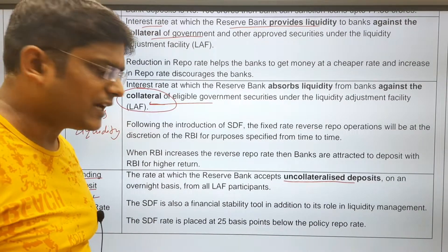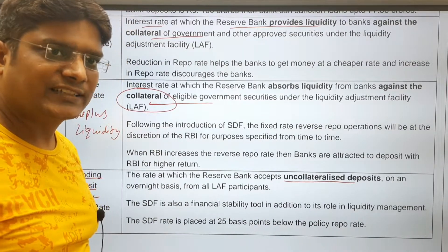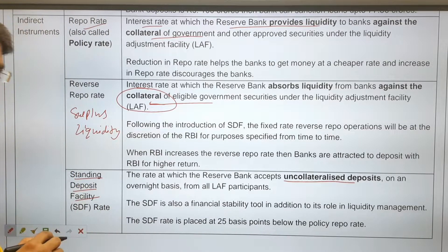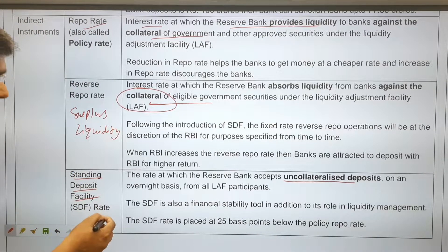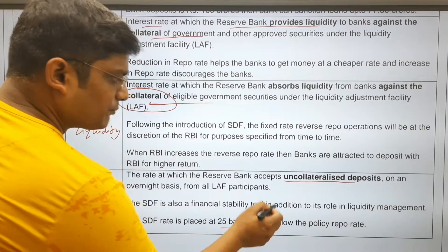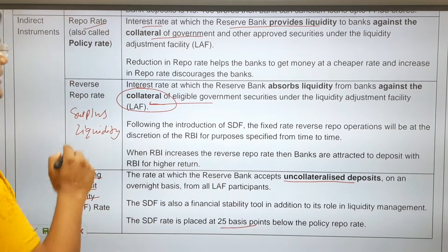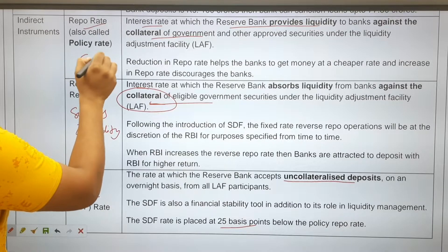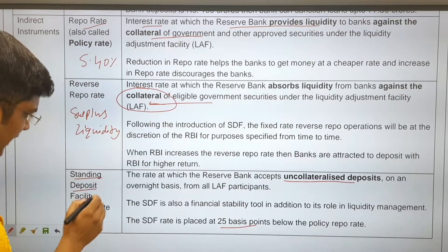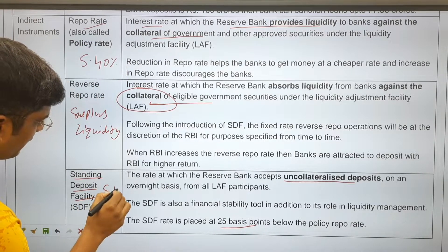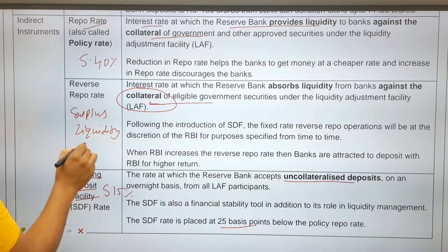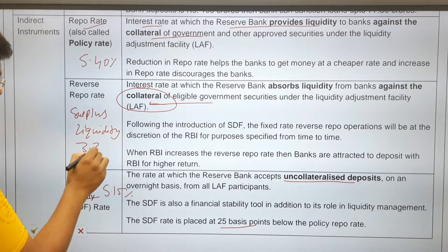Under SDF, without providing collateral, RBI can accept deposits from banks at the Standing Deposit Facility rate. The SDF rate is 25 basis points below the policy repo rate. Policy repo rate is 5.40%, SDF is 5.15%, and reverse repo is 3.35%.